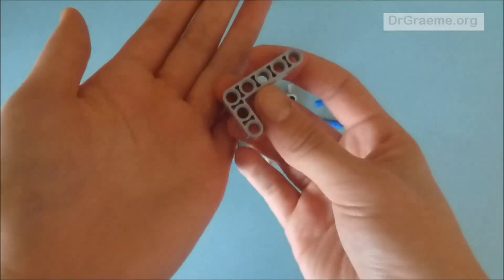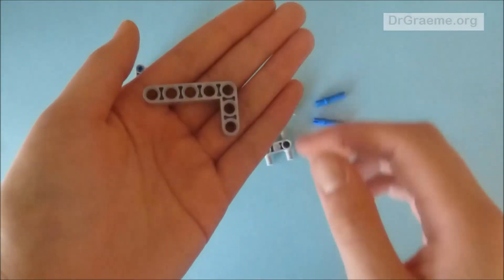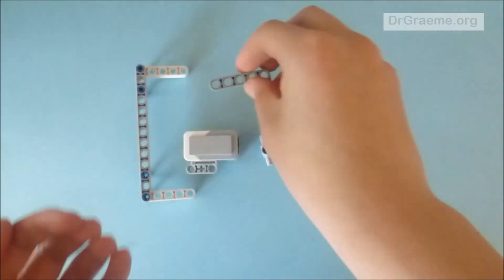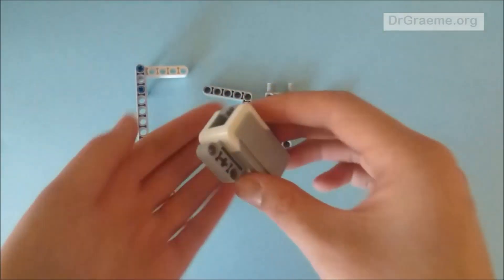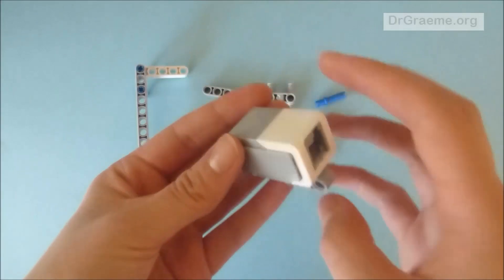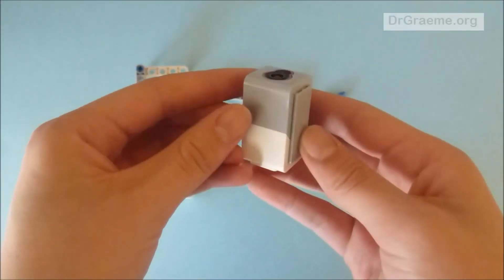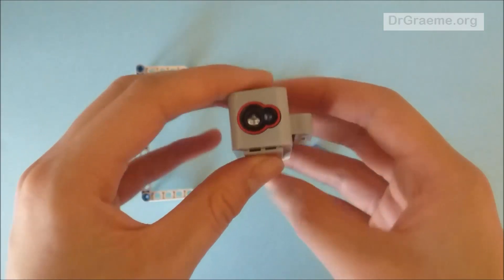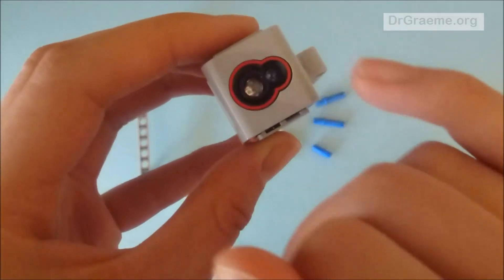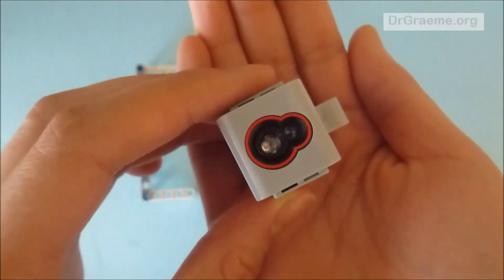We have one of these 3x5 right angle beams, and last but not least we have a light sensor. Now make sure this is the light sensor in your kit and not one of the other sensors. Notice that a light sensor has this pattern at the end.